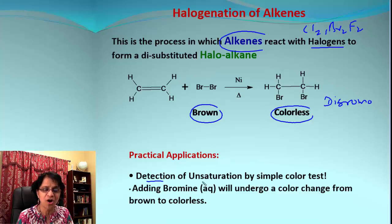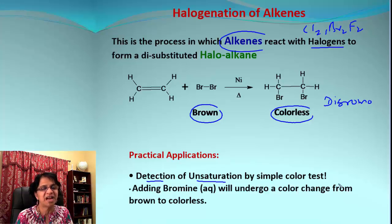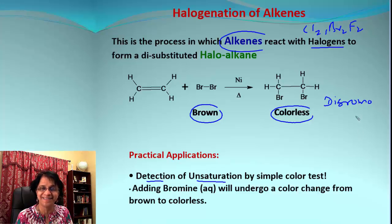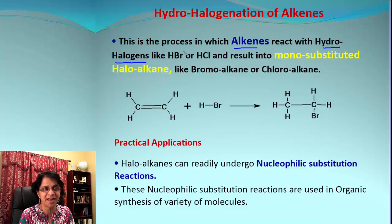We can actually use this reaction for detection of unsaturation. What we need to do is simply add liquid aqueous bromine and observe the color change. If the color changes, that will indicate that what we started with was an alkene.